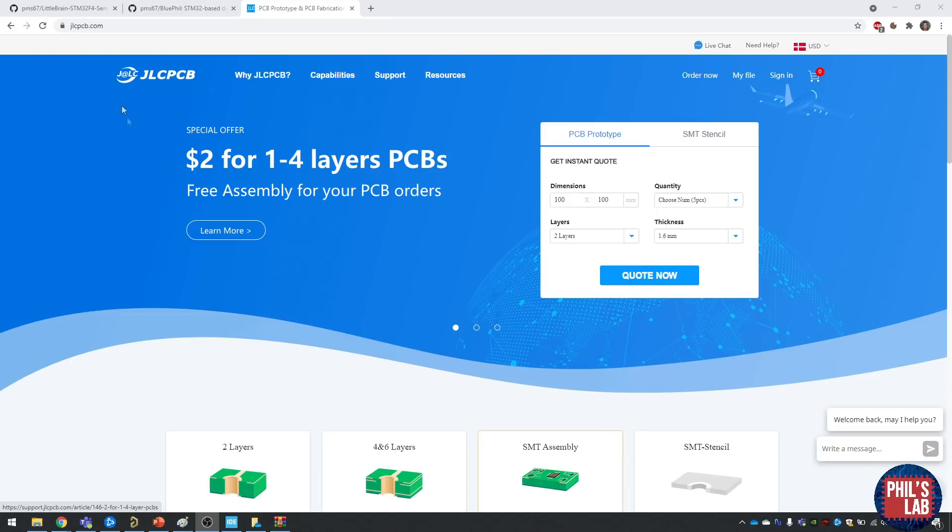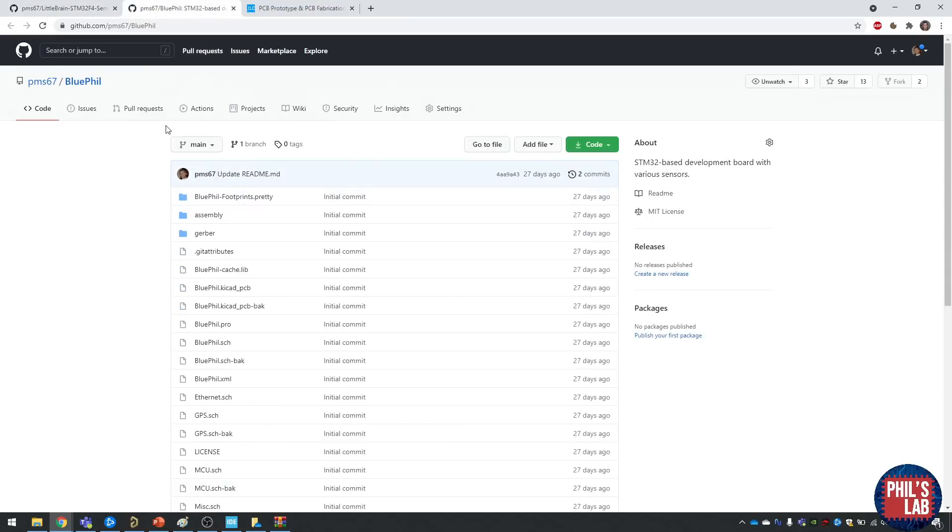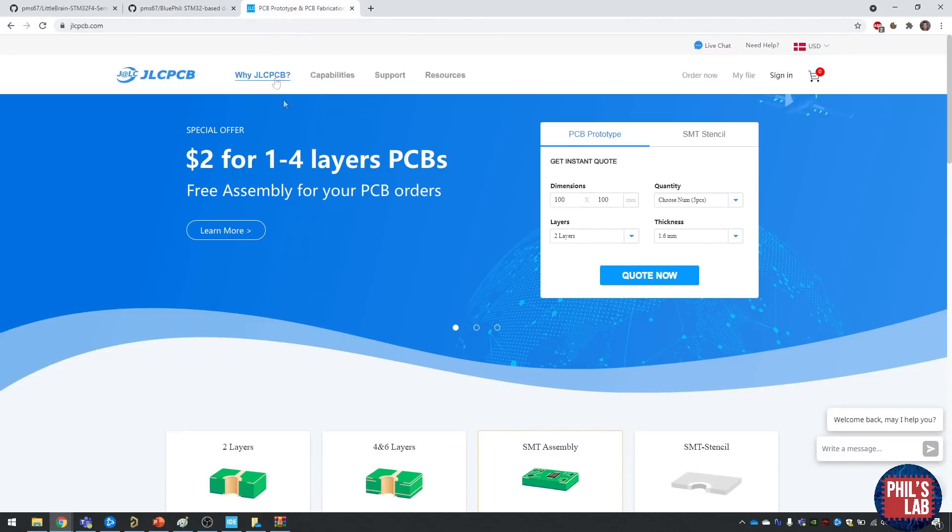Now if you'd like to order this board, I actually have the files publicly available in my GitHub repository. If you go to github.com/pms67 and look for the Little Brain sensor board, you can find all the design files in KiCad there as well as all the firmware I'm writing in these tutorials. Now some parts in JLCPCB might be out of stock and that's why you can actually use this updated version of the Little Brain which has another GPS sensor and different sensors available, and that's called the BlueFill. For that I have the Gerber and assembly files ready for assembly and ordering at JLCPCB.